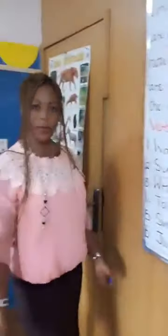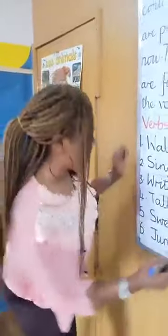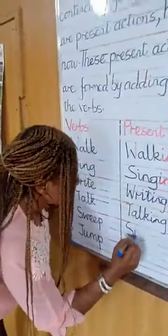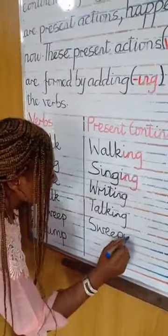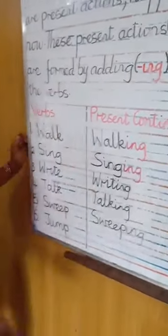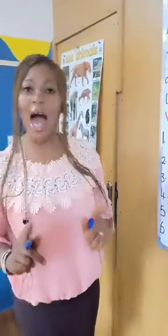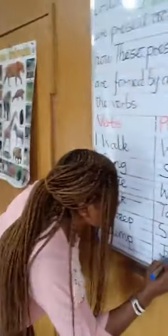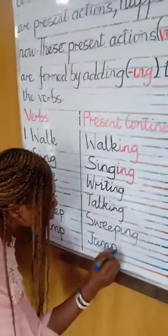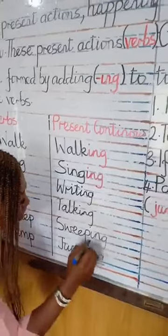Sweep — I'm sweeping now. Jump — jumping, I'm jumping now. Remember that all present actions are happening now, so you will change them to present continuous tense by adding -ing.